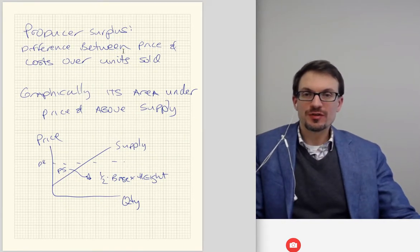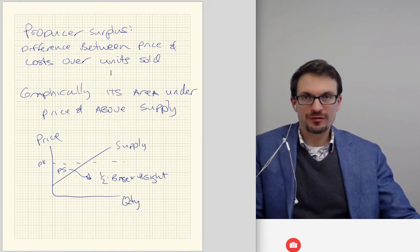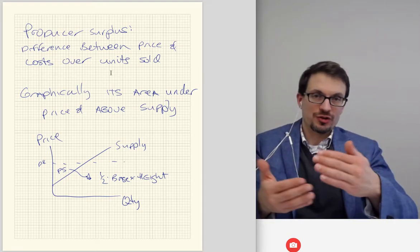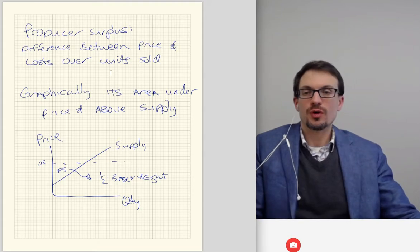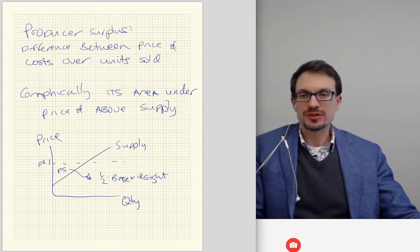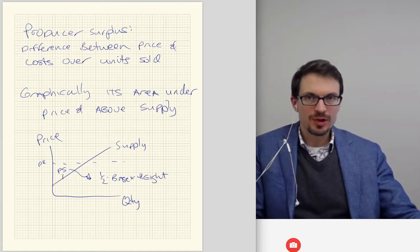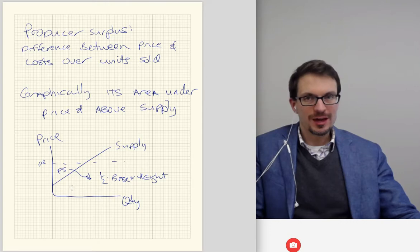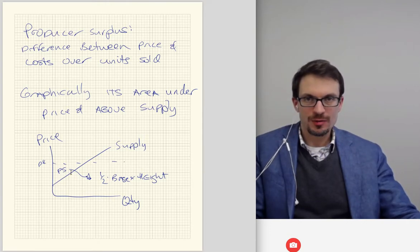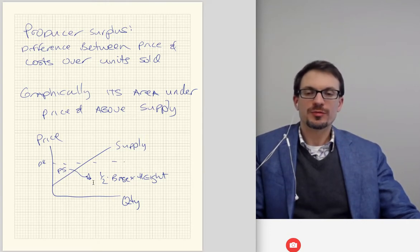Producer surplus is the difference between the price and the cost to the firm — how much they get from buyers minus what it cost them to produce, across the units sold. So graphically, producer surplus is the area under the price and above the supply curve. The theory of supply is the theory of marginal cost — the height of the supply curve is the marginal cost to sellers, computed as one-half base times height.